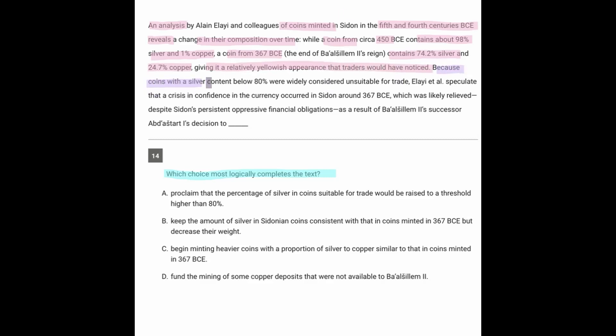Because coins with a silver content below 80% were widely considered unsuitable for trade, they speculate that a crisis in confidence in the currency occurred around that time, which was likely relieved despite persistent oppressive financial obligations as a result of the successor's decision to do what?